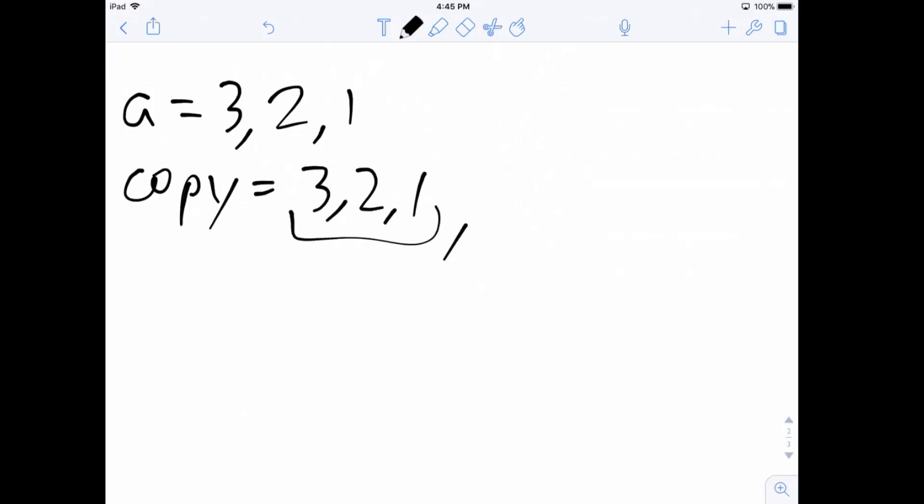So we get three, two, one once, then three, two, one a second time, and three, two, one a third time.